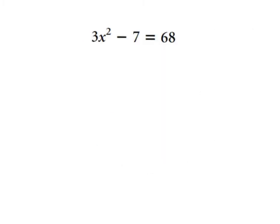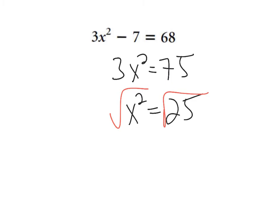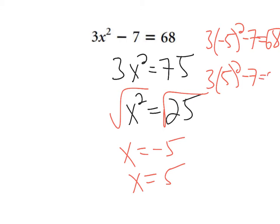So another problem here. If you want, why don't you try this one - stop the video, try it, and come back. So I'm going to add seven to both sides: 3x² = 75. Now I'm going to isolate the x² by dividing by three. And this is nice because when I take the square root of both sides, I have an integer answer. So x can equal negative five, x can equal positive five, and we could check it. I don't always check everything - I probably should. But three times five squared minus seven, going back to the original equation: twenty-five times three is 75 minus 7 is 68. And the same deal for negative five.